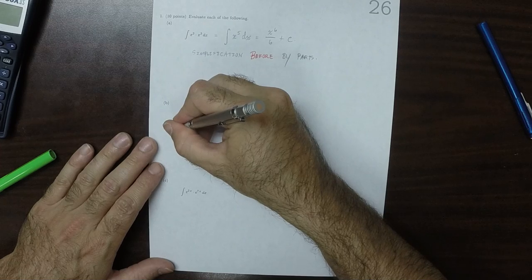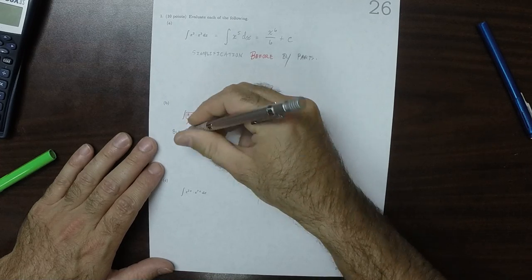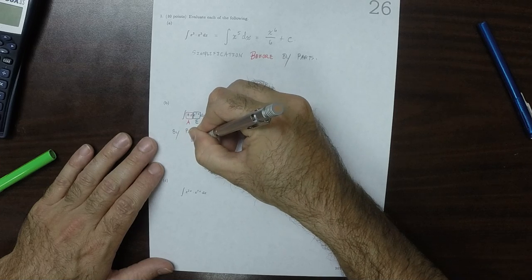And as a result of that consideration, we're going to, in by parts, we're going to select that u is the algebraic part.